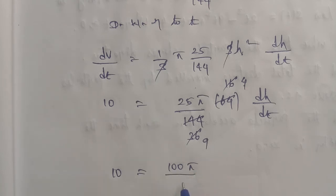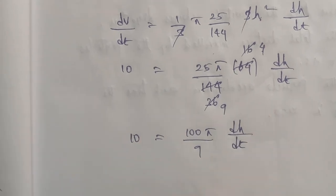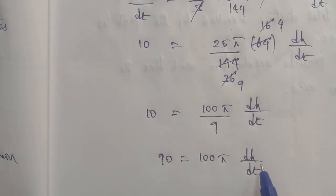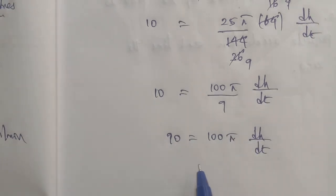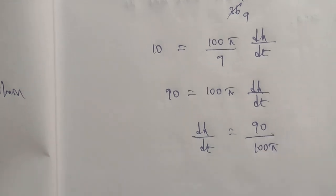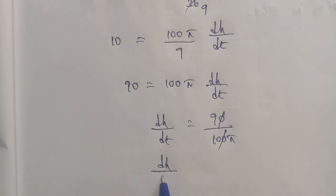Next, to get dh by dt, cross multiply: 10 into 9 is 90, is equal to 100 pi into dh by dt. So dh by dt is equal to 90 by 100 pi. Cancel zeros: dh by dt is equal to 9 by 10 pi meter per minute.